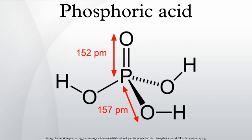Anhydrous phosphoric acid, a white low-melting solid, is obtained by dehydration of 85% phosphoric acid by heating under a vacuum. Orthophosphoric acid is a very polar molecule. It is infinitely soluble in water. The oxidation state of phosphorus in orthophosphoric and other phosphoric acids is plus 5.